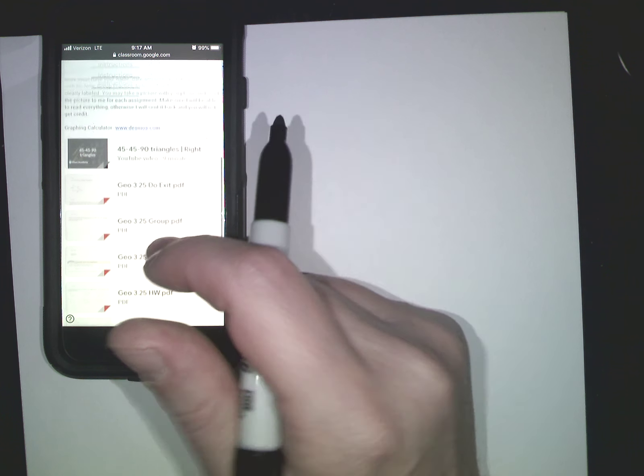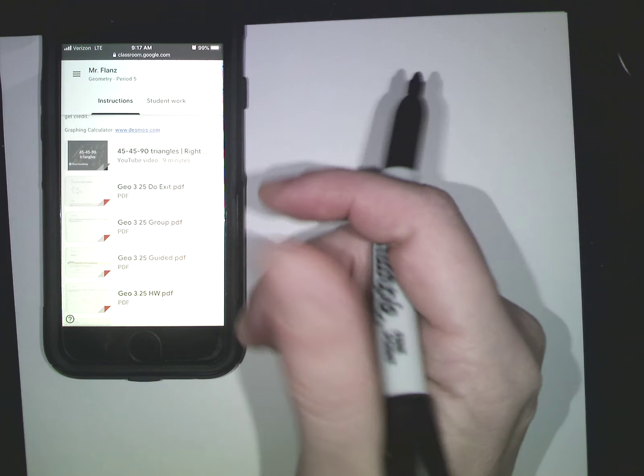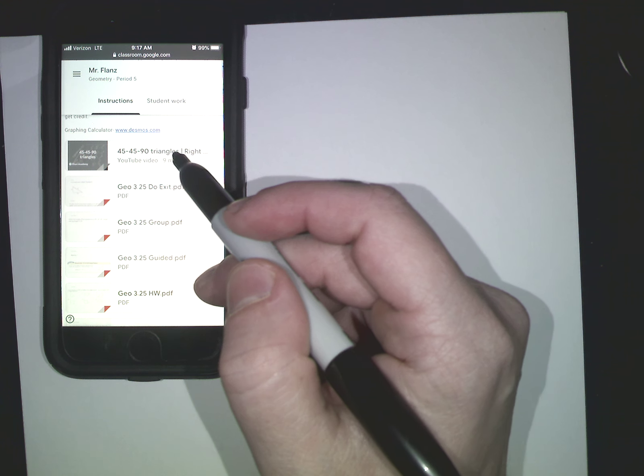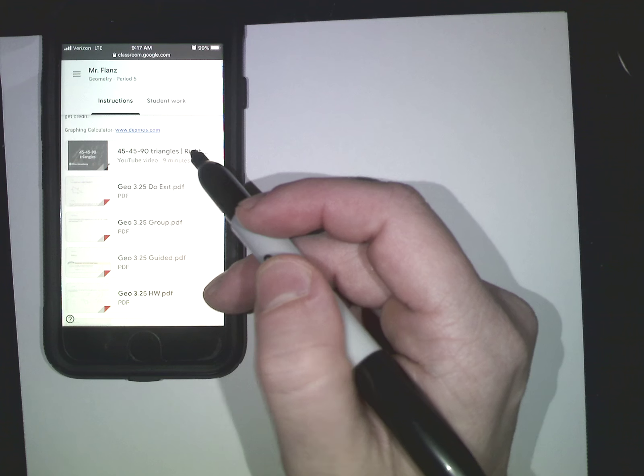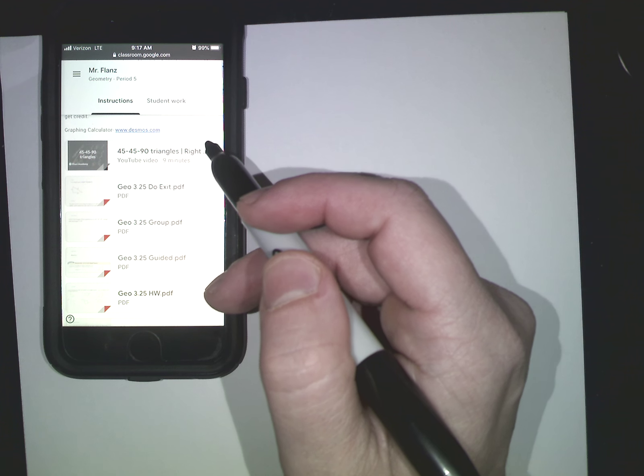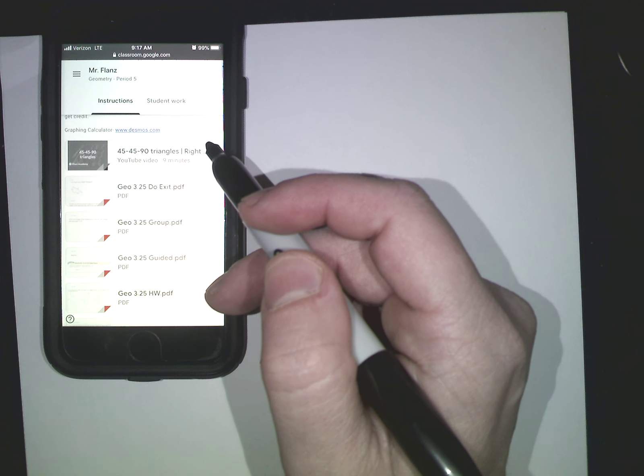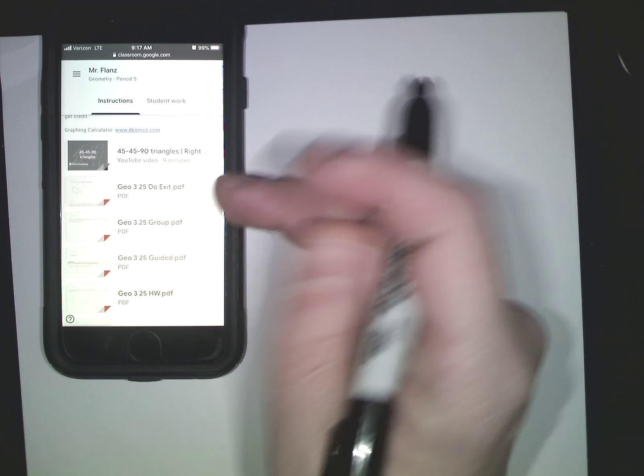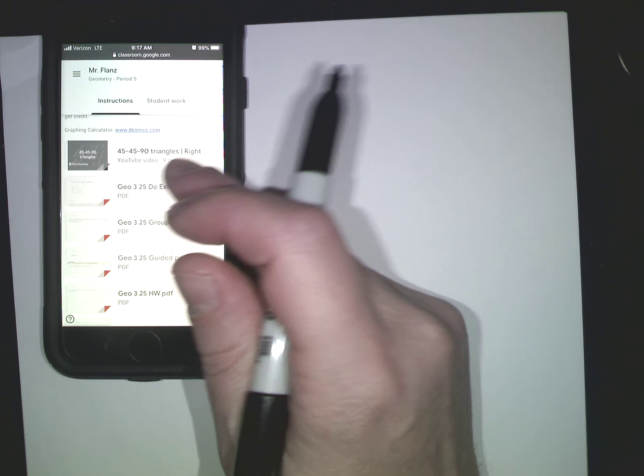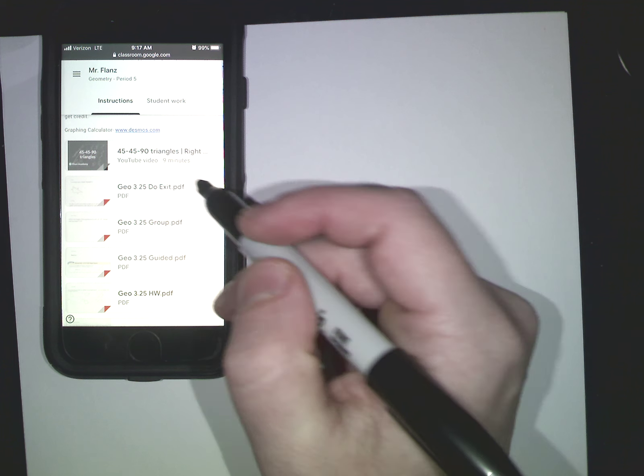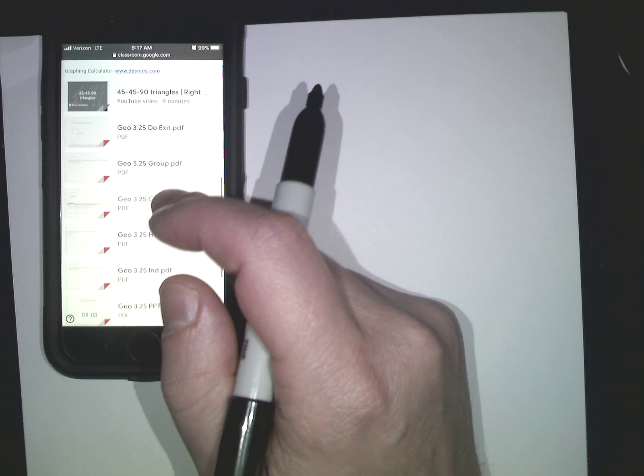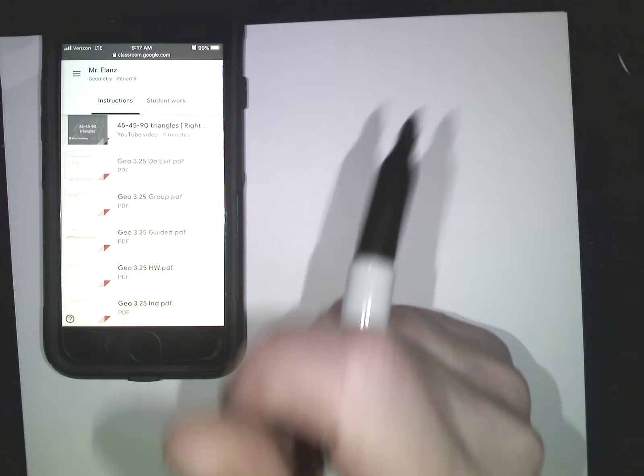The first one up is a video. This is a video from Castle Learning. This one in particular is only 9 minutes long. It's about this particular topic we're talking about, 45-45-90 triangles. So that one, I'd watch that video first, or I'd do the do now. Now all these ones that have labeled PDF at the end, they can come up on any computer. So my first thing I would do is I would go to my do now.